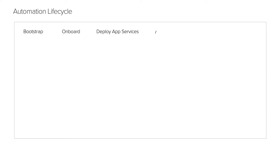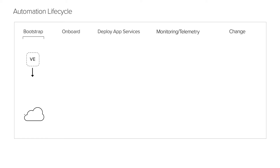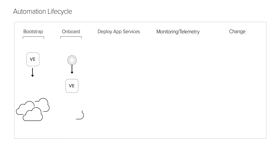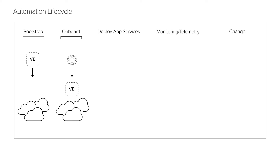As we see it, there are five key stages in the automation lifecycle. The first stage is Bootstrap, where BigIP is spun up in both the public and private cloud. The second stage is Onboarding, where BigIP is configured with Layer 1 through 3 global parameters to make it available on the network and ready to accept Layer 4 through 7 application services configurations.